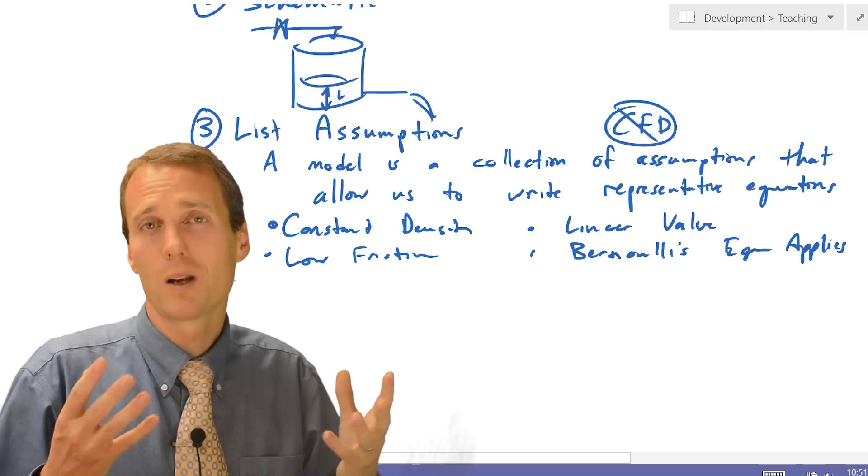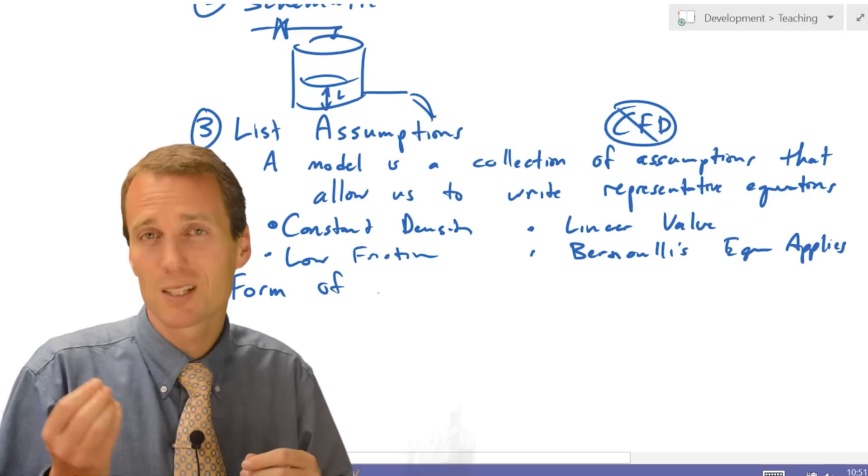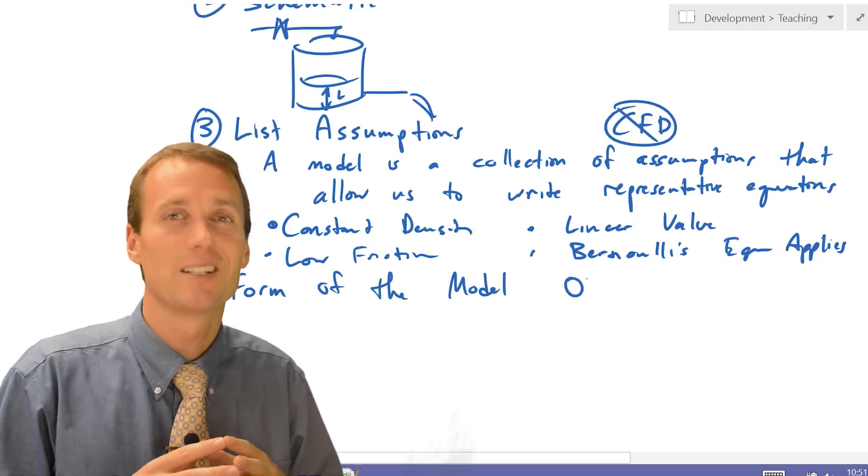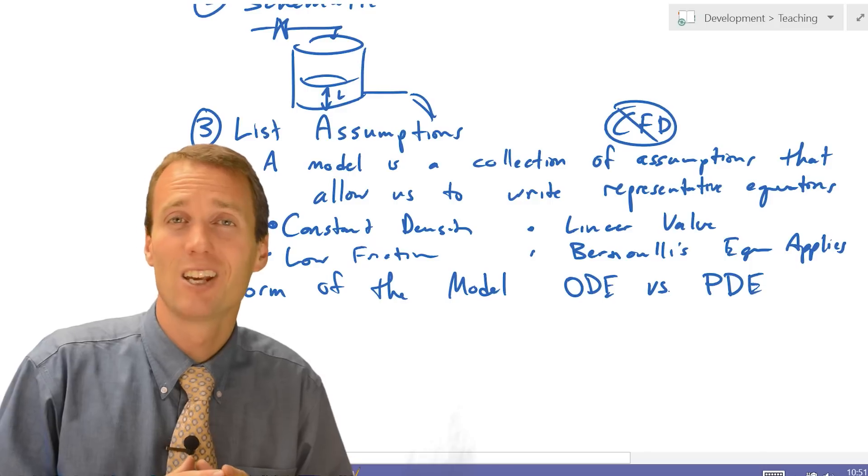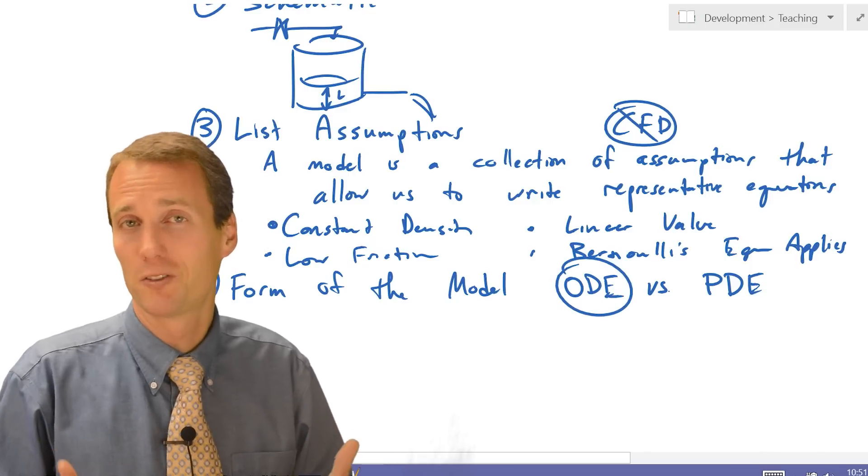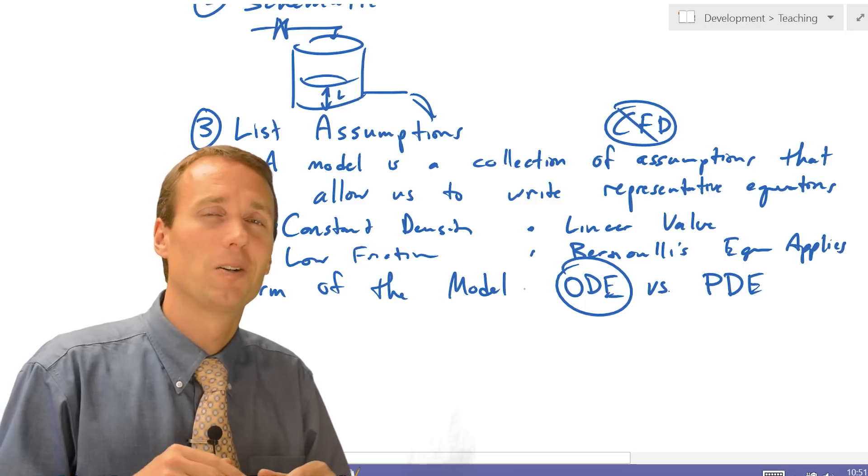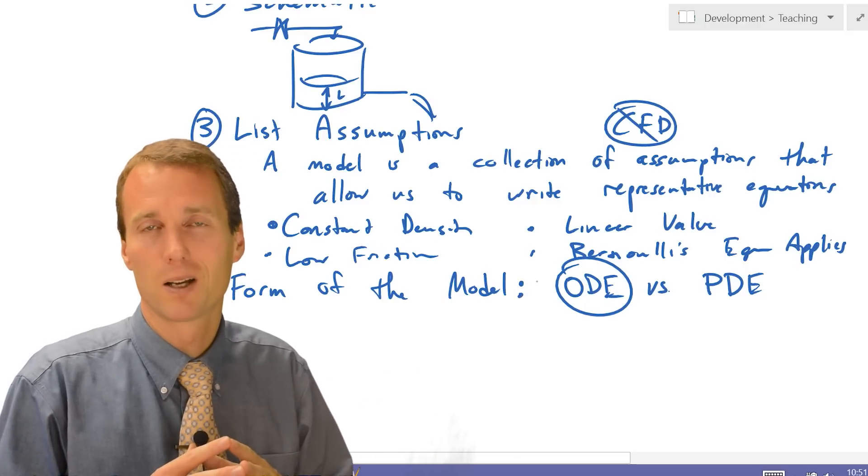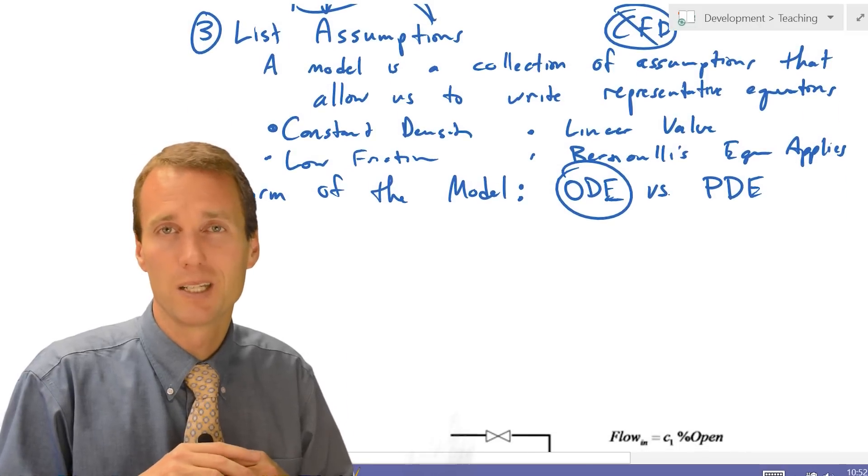So a fourth step is to try to determine what is the form of the model that we're going to need. Is this a distributed system? Does it have spatial dependence or not? In this case, it doesn't, fortunately. So we can write an ordinary differential equation. If it has spatial dependence, we might need to write a partial differential equation to describe this system. So you think about spatial dependence in addition to time dependence for our model. In this case, the fourth step, we determine if it's an ODE or PDE.